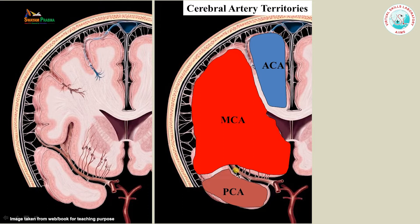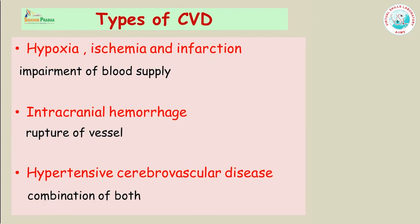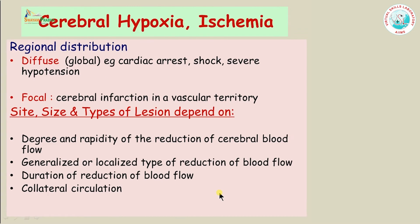The border zones between the anterior and middle circulation and the middle and the posterior circulation are known as watershed areas, and these areas are very prone to infarction — most strokes occur in these areas. Cerebrovascular disease is the third leading cause of death after heart attack. The clinical term is stroke or brain attack, characterized by sudden development of a neurological deficit caused by abnormalities in blood supply to the brain, which can be global or local. Cerebrovascular diseases are divided into 3 main types: hypoxic or ischemic damage, intracranial hemorrhage, and hypertensive cerebrovascular disease.